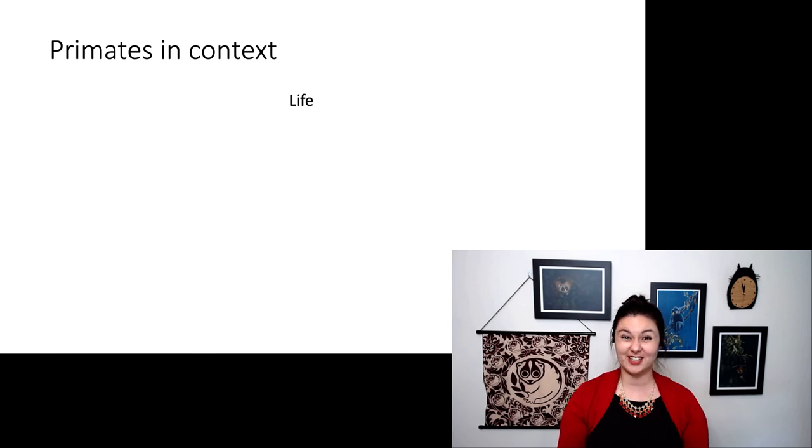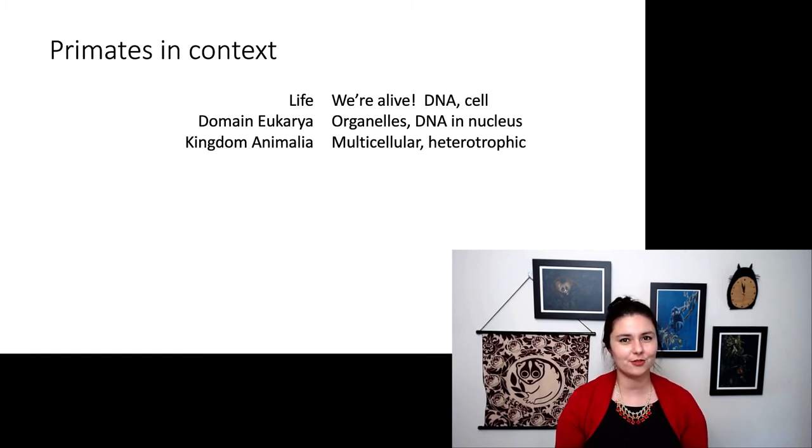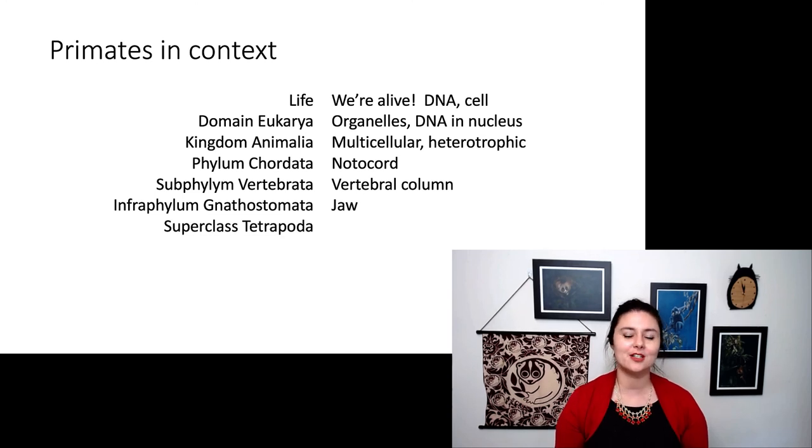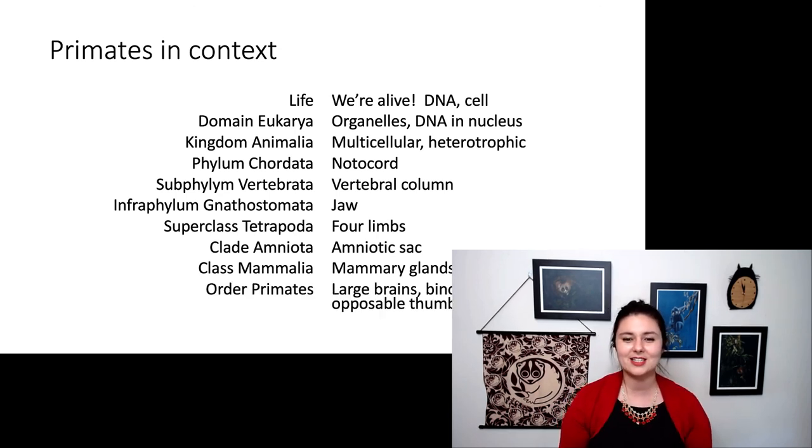So to put this all in context, primates, we are alive. So that means we have DNA and a cellular structure. We are in domain eukarya. So we have organelles and our DNA is in a nucleus. We're animals. So we are multicellular and heterotrophic or we need to eat other animals to survive. We're in phylum chordata. We have that notochord. Subphylum vertebrata. We have a vertebral column protecting that notochord. We're in infraphylum gnathostomata, which means we have a jaw at all. We are superclass tetrapoda. We have four limbs. Clade amniota, we have an amniotic sac protecting our embryo. Class mammalia, that's our mammary glands and homeothermia. And we are in order primates. So that means our large brains, binocular vision, and opposable thumb.